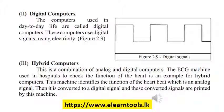The next type is hybrid computers. This is a combination of analog and digital computers. The ECG machine used in hospitals to check the function of the heart is an example. This machine identifies the heartbeat, which is an analog signal, then converts it to a digital signal, and these converted signals are printed by the machine.